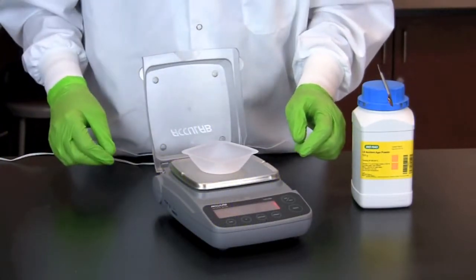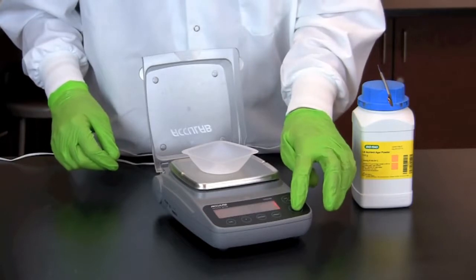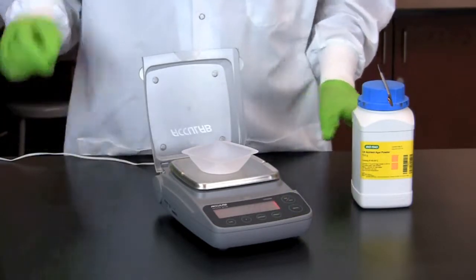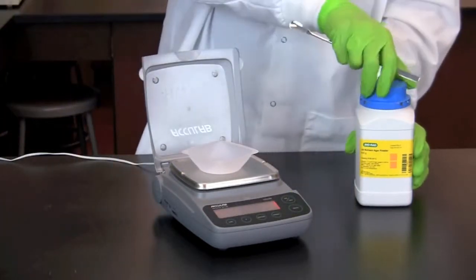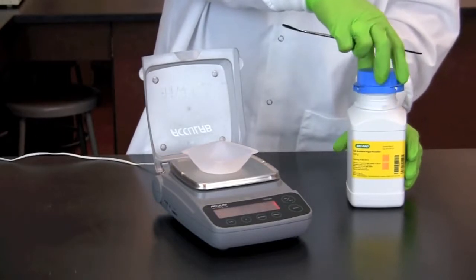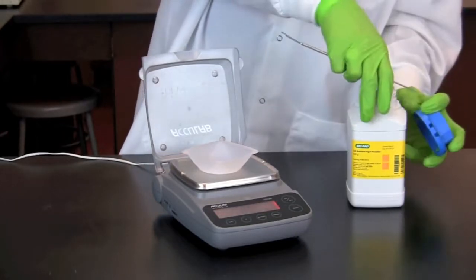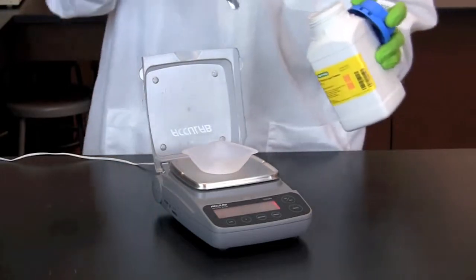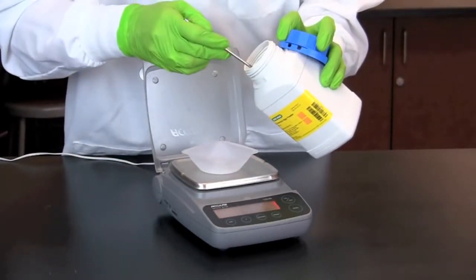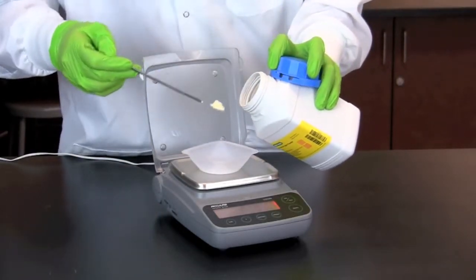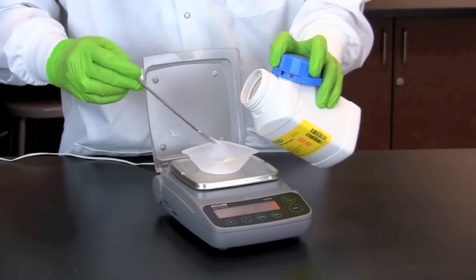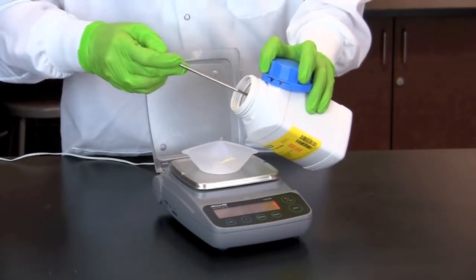Using an electronic balance, we place a weigh boat on the weighing platform and zero the balance. We then add LB agar powder slowly using a clean spatula until the proper amount is reached.